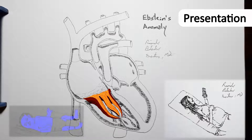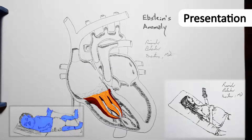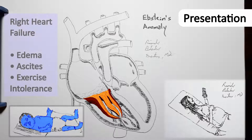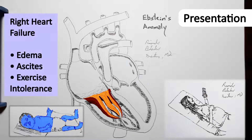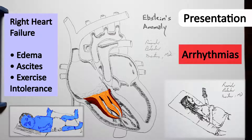Children and teenagers may present with cyanosis and, perhaps, right heart failure, manifested as edema, ascites, and exercise intolerance. And adults and the elderly will most likely present with right heart failure and/or arrhythmias.